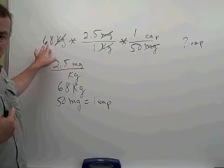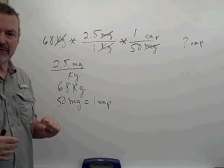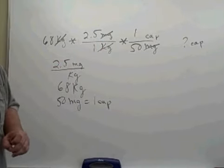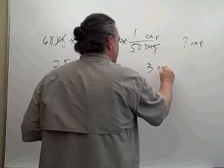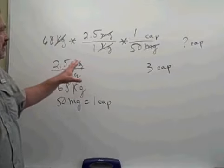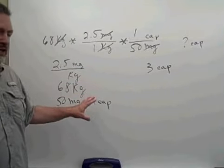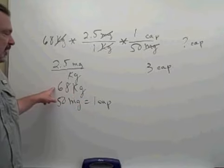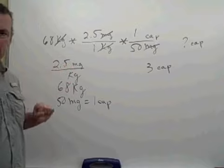Now we can do our arithmetic. We can use our calculator, take 68 times 2.5, divide that answer by 50, and we would get three capsules. Three capsules then would be the appropriate dosage for this patient who weighs 68 kilograms when the drug is being administered at 2.5 milligrams per kilogram.